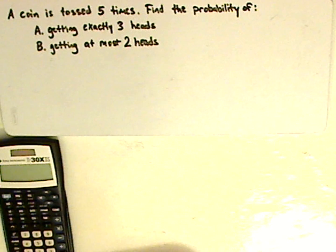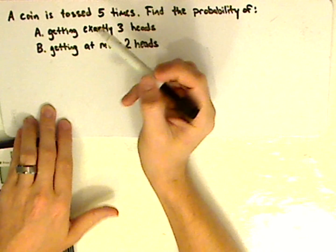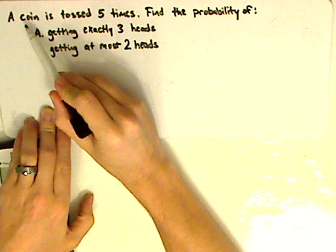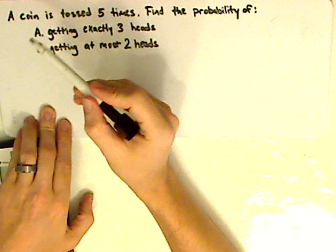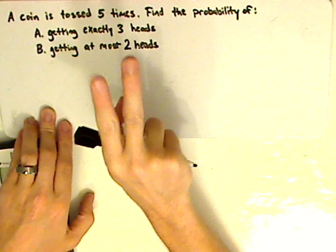Alright, there's a long way and there's a short way to do this. I'm going to just show you the short way today. Notice that this is a coin so you can either get heads or tails. So there's two outcomes.